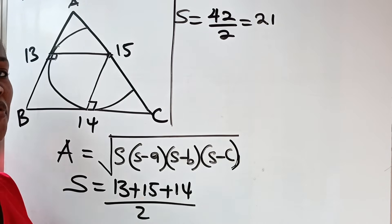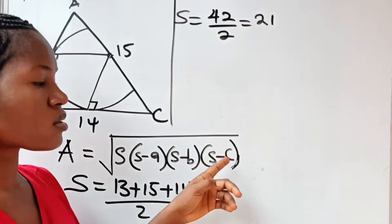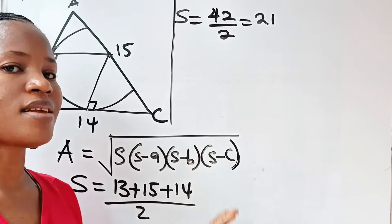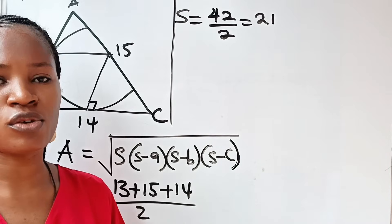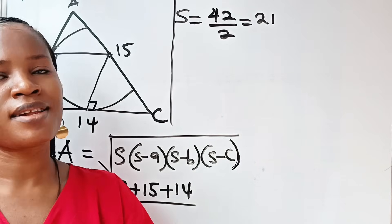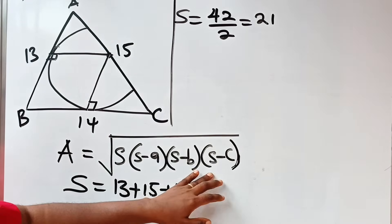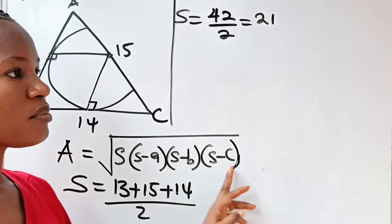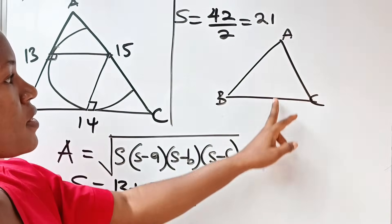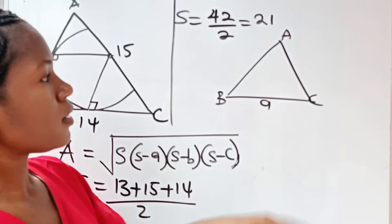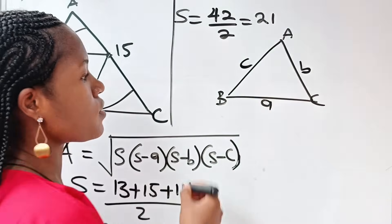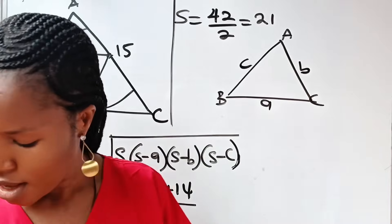Let me explain what a, b, and c are. In a triangle ABC, the side facing angle A is the small a, the side facing angle B is small b, and the side facing angle C is small c. That is where a, b, and c come from. Now let's go ahead and find the area.